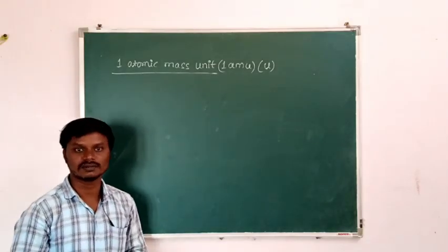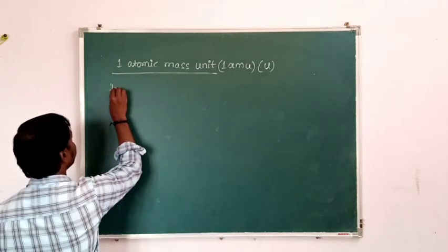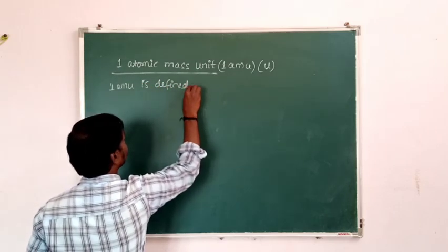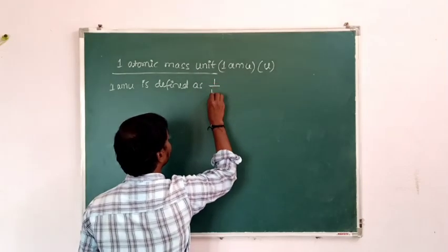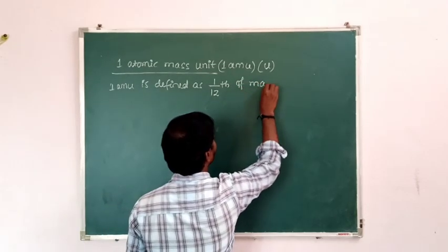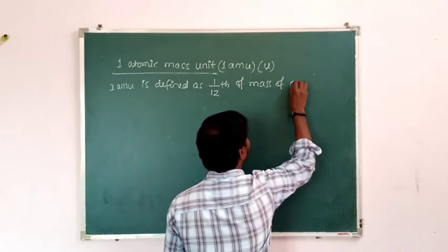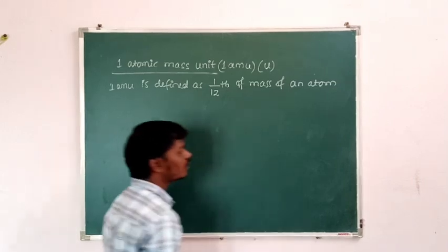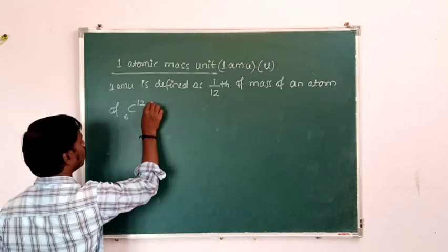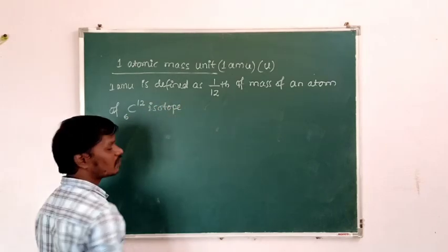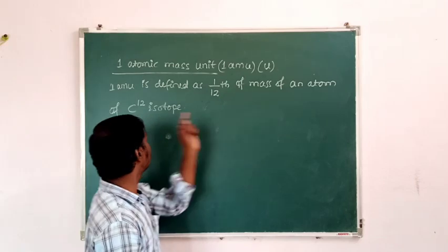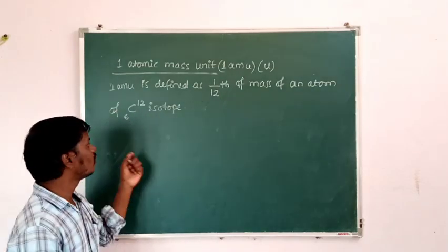So how do we define one atomic mass unit? One atomic mass unit is defined as 1/12 of the mass of an atom of the Carbon-12 isotope. So one atomic mass unit is defined as 1/12 of the mass of an atom of the Carbon-12 isotope.